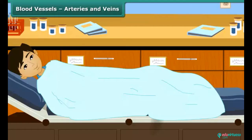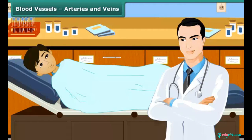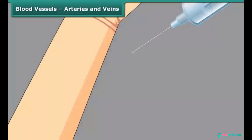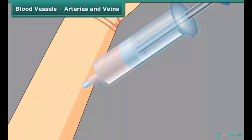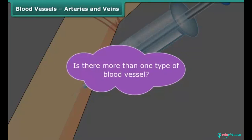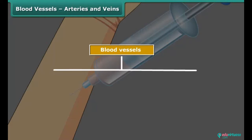When Rahul was unwell, his doctor recommended a blood test. The technician collecting blood samples first checks for a particular kind of blood vessel to prick and collect the blood. Is there more than one type of blood vessel? Yes, there are three types of blood vessels in our body.